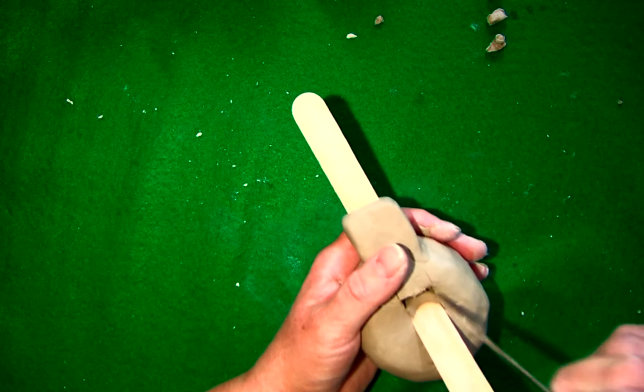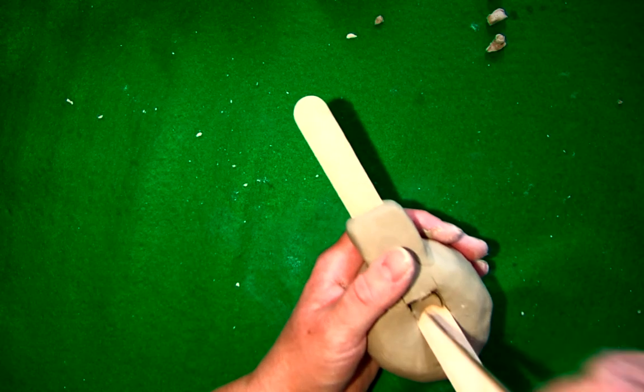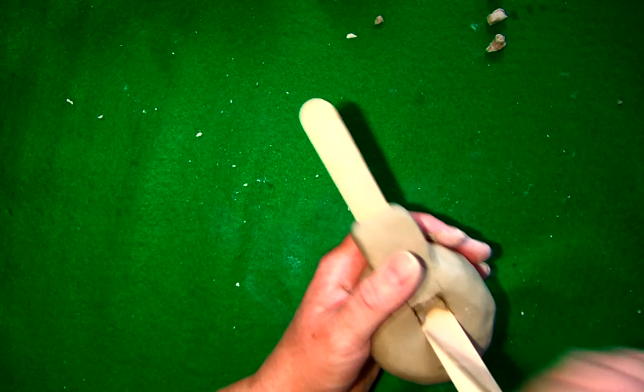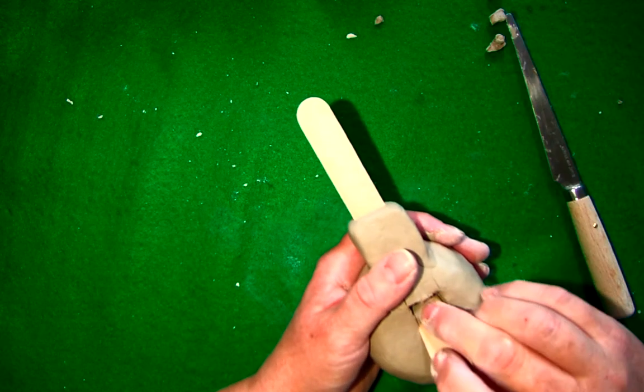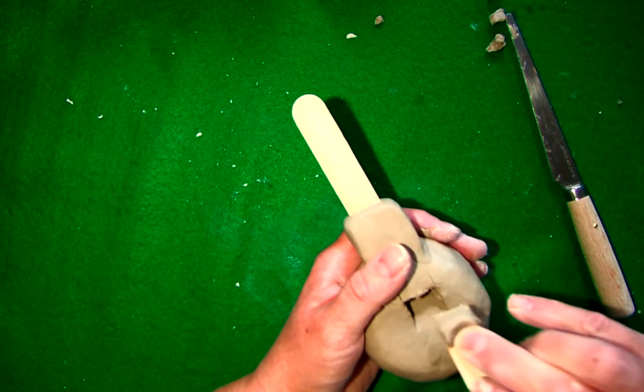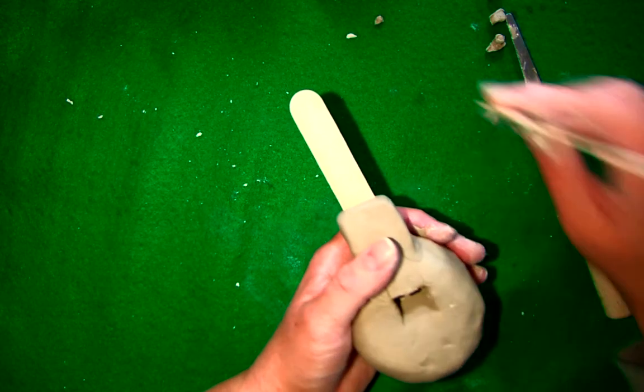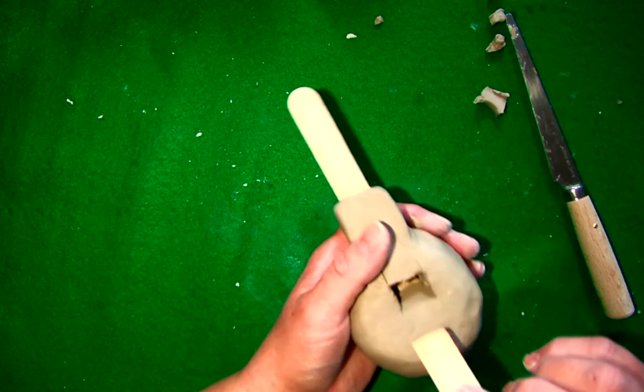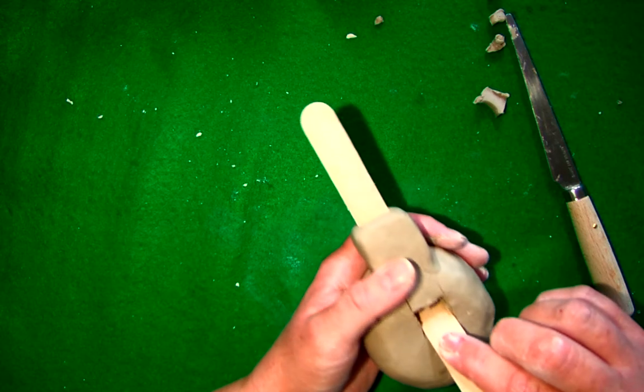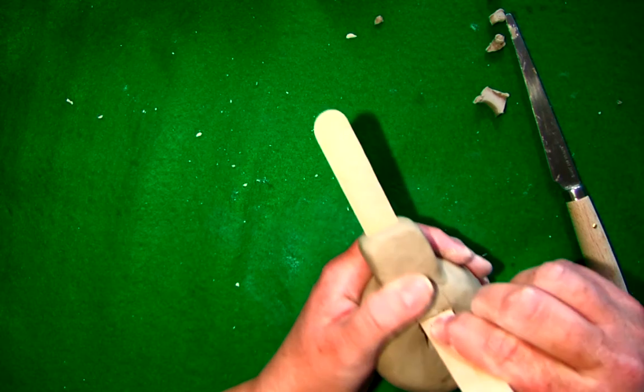And then I'm going to use my fettling knife again and I'm going to cut that extra piece of clay out. And I'm just going to lift it out. I've got that piece of clay there. So you see how that edge goes in at an angle, and now I'm just going to clean this up a little bit.